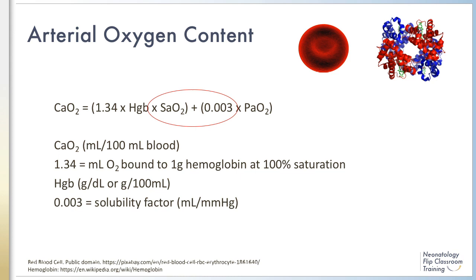Hemoglobin is hemoglobin concentration, which is generally presented in grams per deciliter or grams per 100 milliliters. SaO2 is the amount of oxygen bound to hemoglobin or the percentage of hemoglobin saturated with oxygen. And 0.003 is the solubility factor of oxygen in plasma in milliliters per milliliters of mercury. Note that the first part of the equation contributes more to the oxygen content than the PaO2, which is multiplied by the small solubility factor.